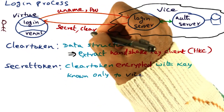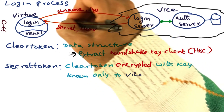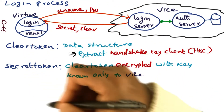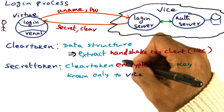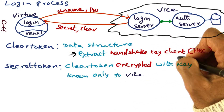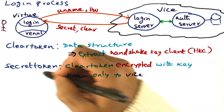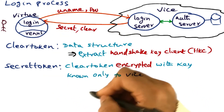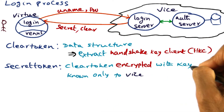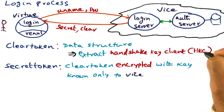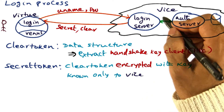Once the login process gets these two tokens, it decrypts the message that contains them and extracts the clear token and the secret token. The clear token is a data structure which contains a handshake key — we'll call it HKC. The login process can extract this handshake key from the clear token. The secret token is just a bit string, generated by the login server by encrypting the clear token with a key known only to Vice — not the same as HKC.